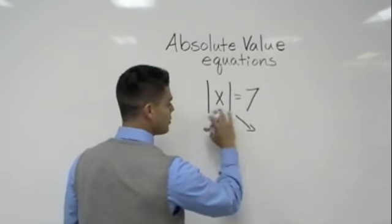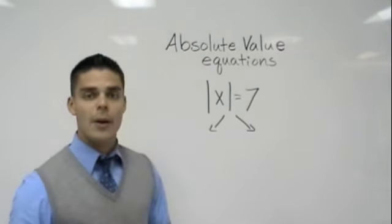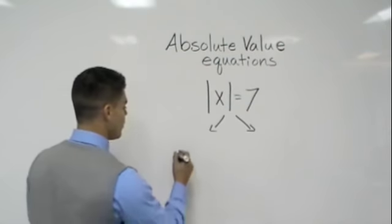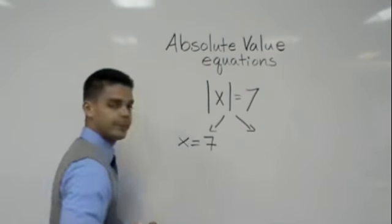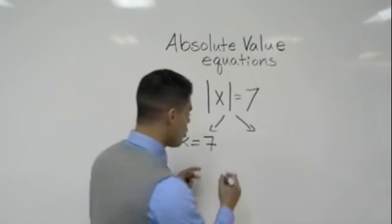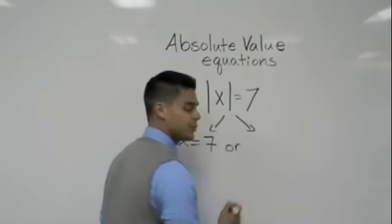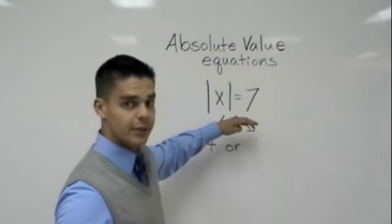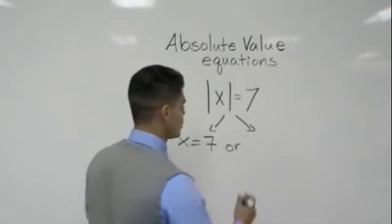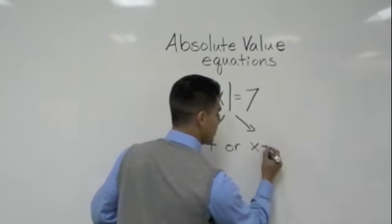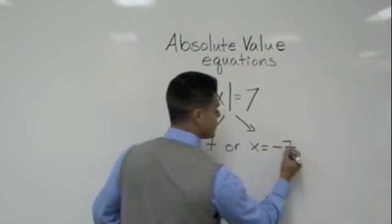The first is going to be very similar to this equation except we're going to lose the absolute value. So we're going to go ahead and write it as x is equal to 7. Or our second one is going to be again very similar. The difference is we're going to make the answer a negative or the opposite. So it's going to be x is equal to negative 7.